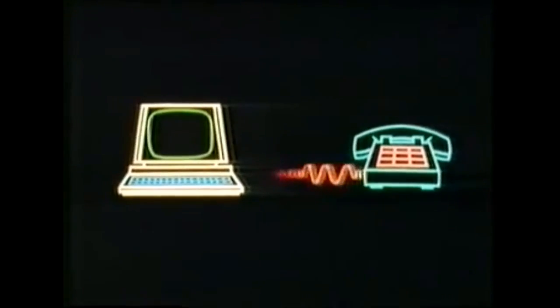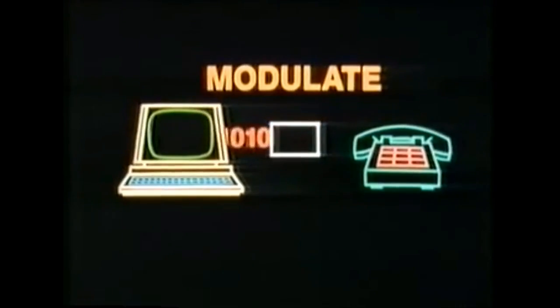The computer needs help in using the telephone, because computers and telephones don't talk the same language. The computer speaks binary code — ones and zeros — whereas the telephone speaks in a series of tones. So you need to put a special black box between the computer and the telephone to transform, or modulate, computer talk into telephone talk.